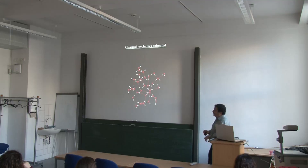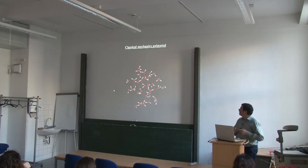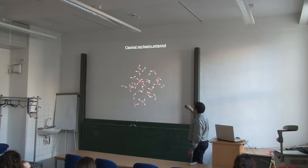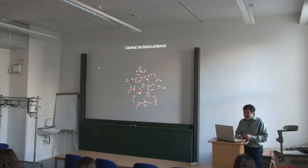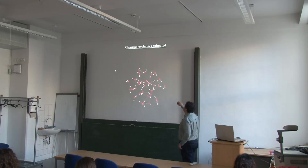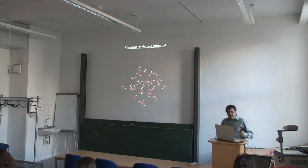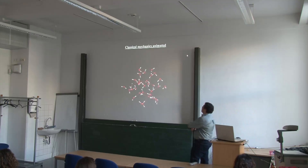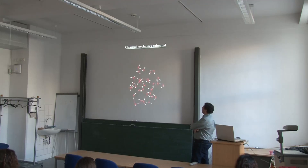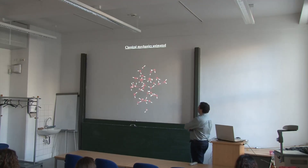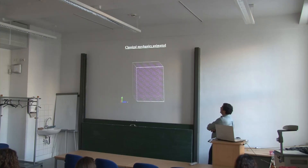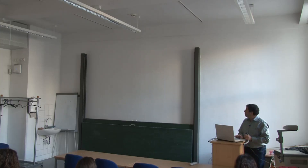If you add interactions, you can simulate something like water. This is actually a very detailed first-principles molecular dynamics model where everything is computed from electronic structure on the fly. You can see water moving around, and the important thing is the dashed lines representing hydrogen bonds — they form and then break again, with water molecules changing their hydrogen-bonding partners, which is tied to the diffusion process of water.